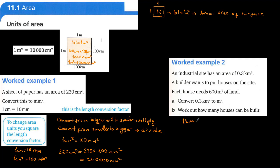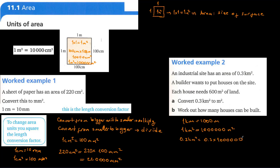One kilometer equals 1,000 meters, so one kilometer square equals one million meters square. Therefore, 0.3 kilometers square equals 0.3 times one million. Since the decimal point moves, eliminating zeros, we get 300,000 meters square.